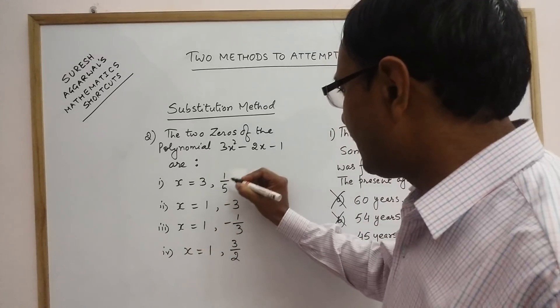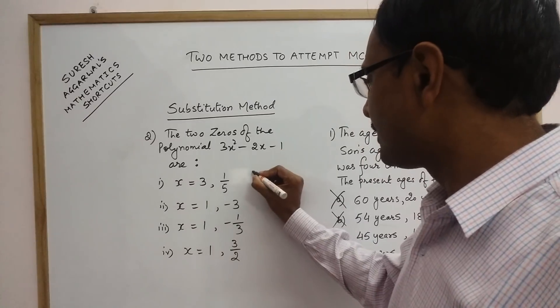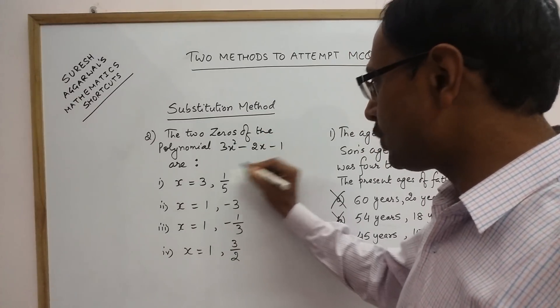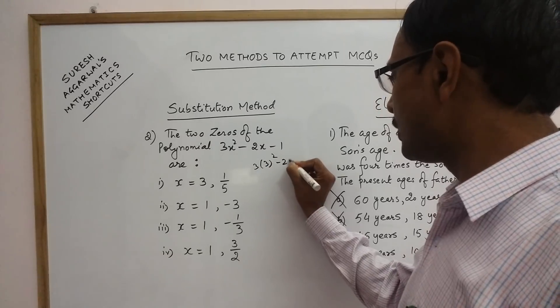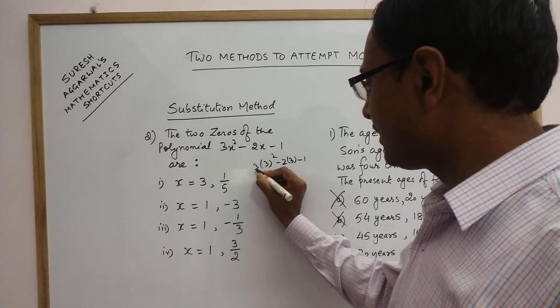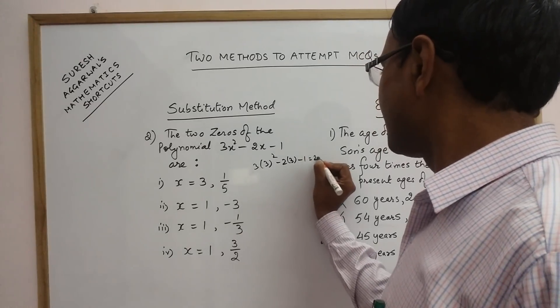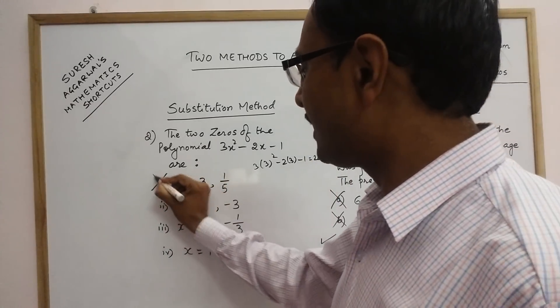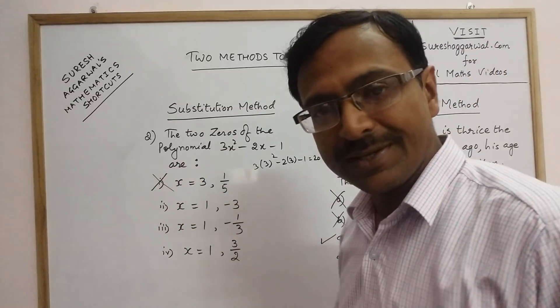Now see, if we put x equal to 3 in this, this is substitution method. We are substituting x equal to 3 in this. So, 3 into 3 square minus 2 into 3 minus 1. So, this is 9 threes are 27 minus 7, so this is 20. So, obviously, our answer does not come out to be zero. So, first option is eliminated.